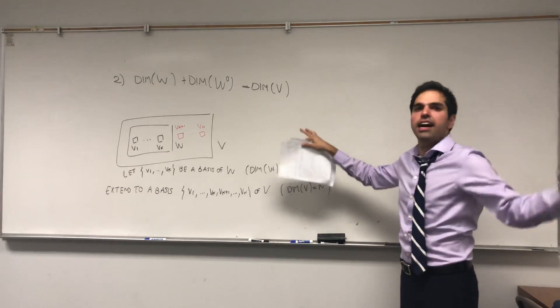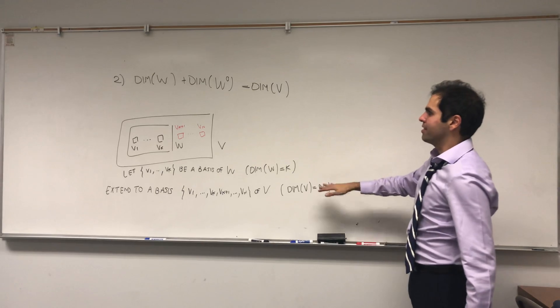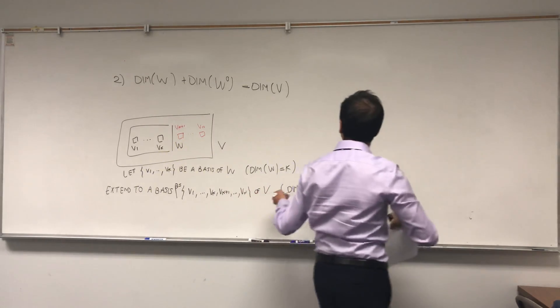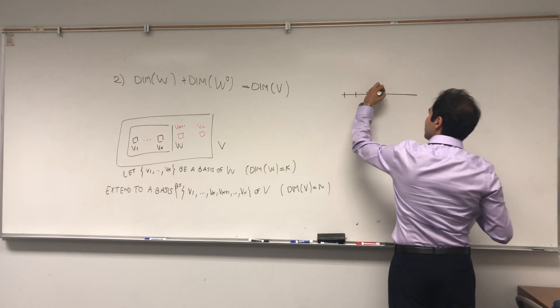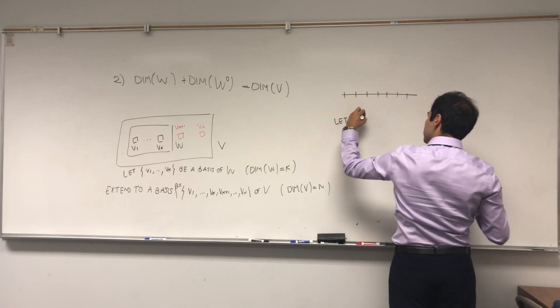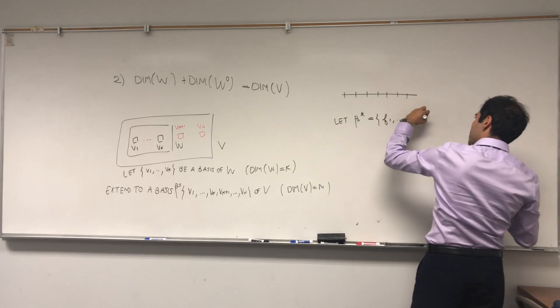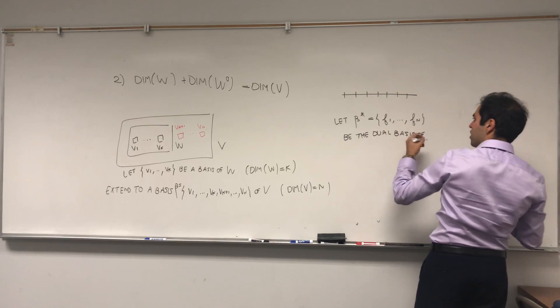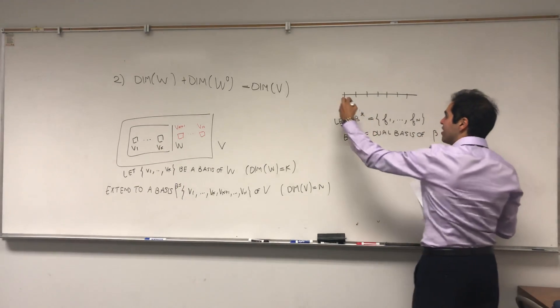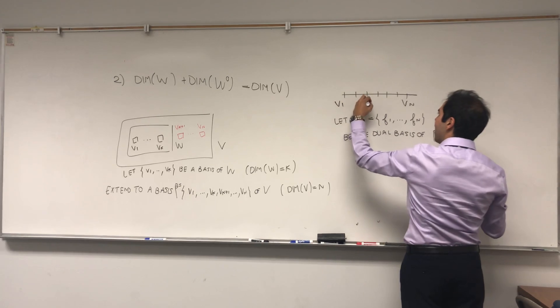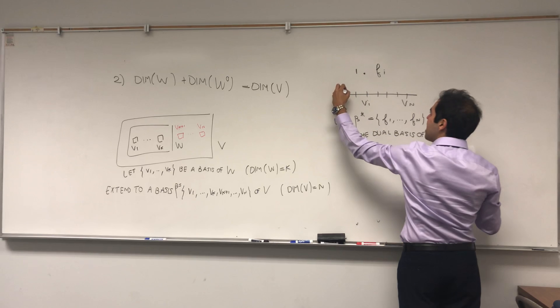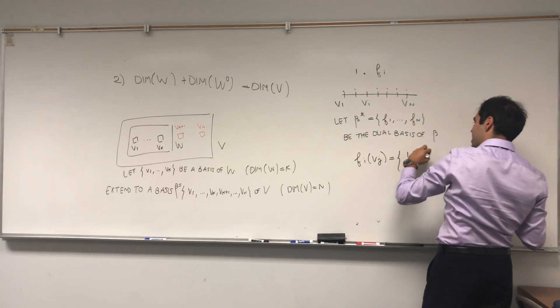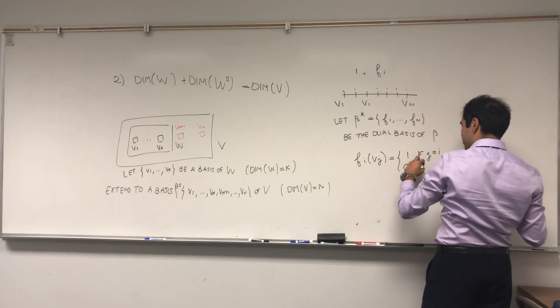So we have those k initial vectors and we extend it to all the space, so vk plus one dot dot dot up to vn. Okay, that's good. So that's on the V side or the W side. Now we want to talk about the dual space side. And I would like to remind you, if you have a basis, then you can construct what's called the dual basis. So let beta star be F1 up to Fn, be the dual basis of beta.